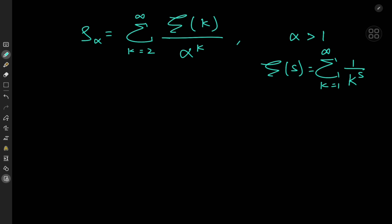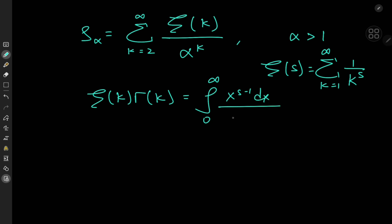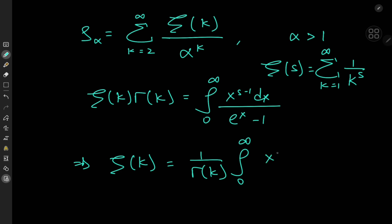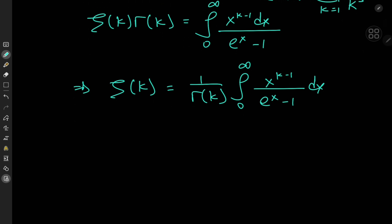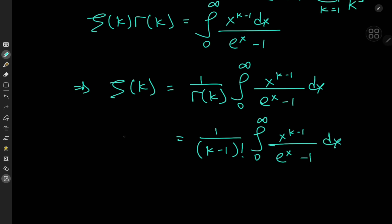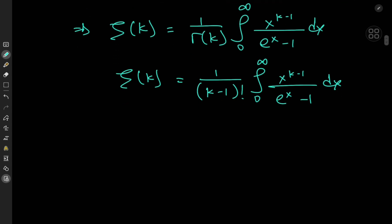What is that functional relationship between the zeta and gamma functions? Well, we have zeta(k) times Gamma(k) equal to the integral from 0 to infinity of x^(s−1) dx divided by e^x minus 1. This implies that zeta(k) equals 1/Gamma(k) times the integral from 0 to infinity of x^(k−1) dx divided by e^x minus 1, and Gamma(k) is k minus 1 factorial. So we have 1/(k−1)! times the integral from 0 to infinity of x^(k−1) divided by (e^x − 1) dx. This is an integral representation for the Riemann zeta function, and since I do integrals for a living, it makes sense to evaluate an infinite series in terms of an integral.